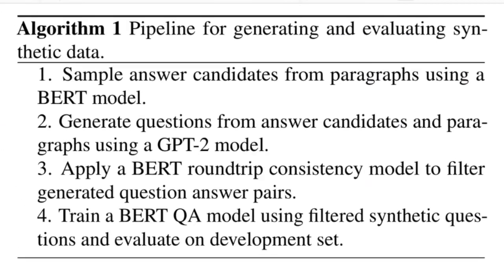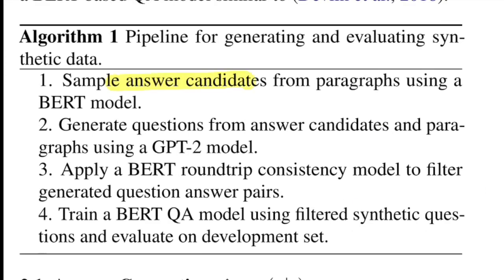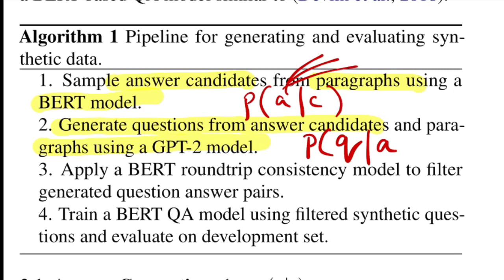Let's see the algorithm. The first step is to sample the answer candidates from paragraphs using a BERT model, which is similar to learning p(a|c) where c belongs to a paragraph. Once you get many answers, the next step is to generate questions from these answer candidates and paragraphs using the GPT-2 model that basically learns to output a next token considering whatever it has generated in the past. As part of this step they are learning the probability of generating a question Q given the answer that I have sampled—let's call this set A hat. I'll give this A hat and the context c, and this way I'll generate some questions, let's call this Q hat.